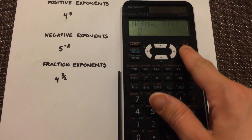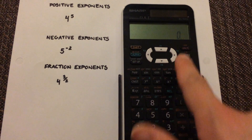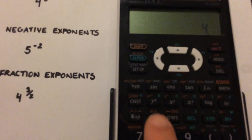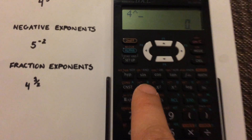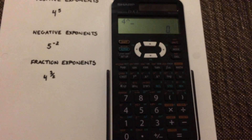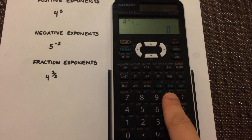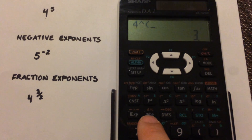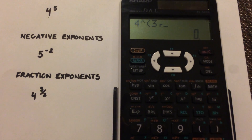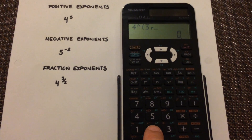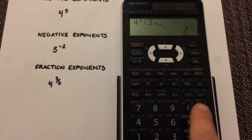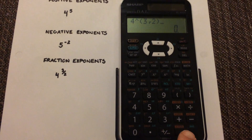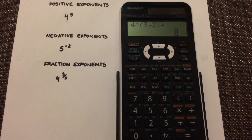The last example I'm going to show you is a fraction exponent. So 4, and then again select the y to the x. In brackets, you're going to enter the fraction. So bracket, 3, and then this is the fraction button — the ABC — so you'll see it's separating it. Then 2, close the bracket. You'll see 4 with an exponent 3 over 2. Select equals and you'll see that it's 8.